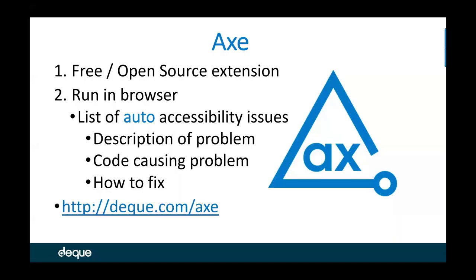I'm going to highlight for you a free open-source extension that lets you run accessibility testing automatically in your browser — getting a description of the problem, the exact line of code causing the problem, and an explanation of how to fix it. You could download and install this in your browser today and get some steps forward in accessibility. It's a wonderful free open-source gift I encourage everyone to get installed.